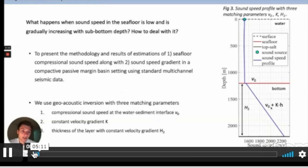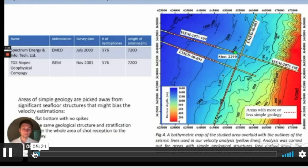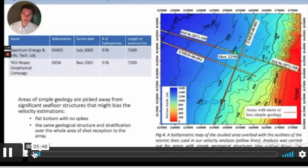First parameter is sound speed at water sediment interface V0. Second parameter is constant velocity gradient K. And third one is thickness of this sub-bottom layer H2. The experiment. We use two datasets that were carried out in July 2000 and November 2001. It means that there is strong stratification in the water. That's why we used water velocity data using CTD. And the length of the antenna is 7.2 kilometers. And these are the seismic lines that we use. In this presentation, I will show you results for one point. It's 2290 of line 108,